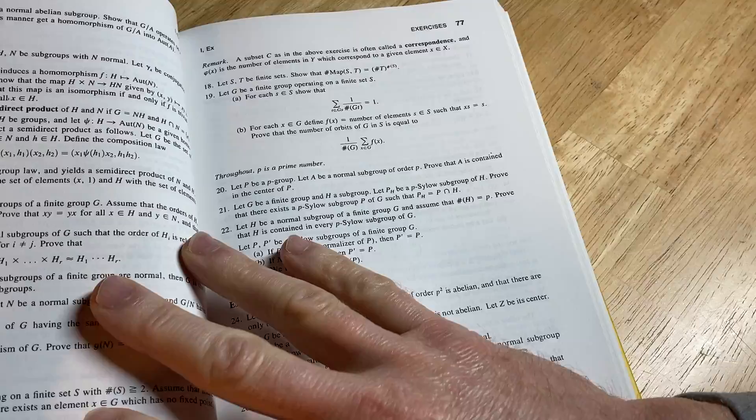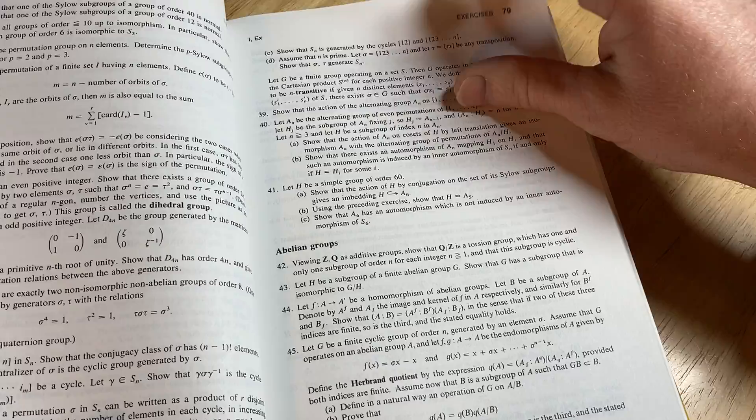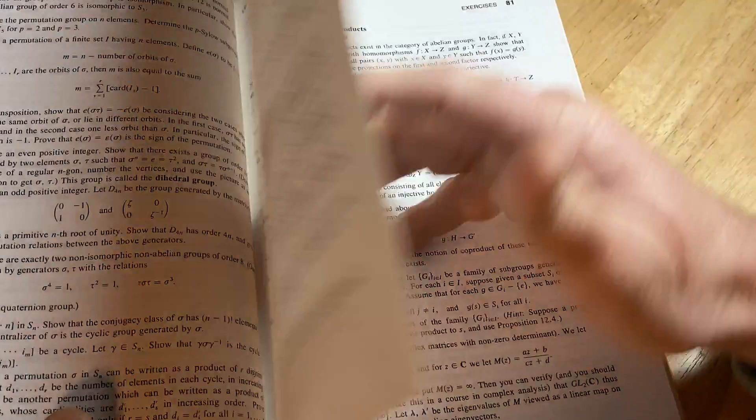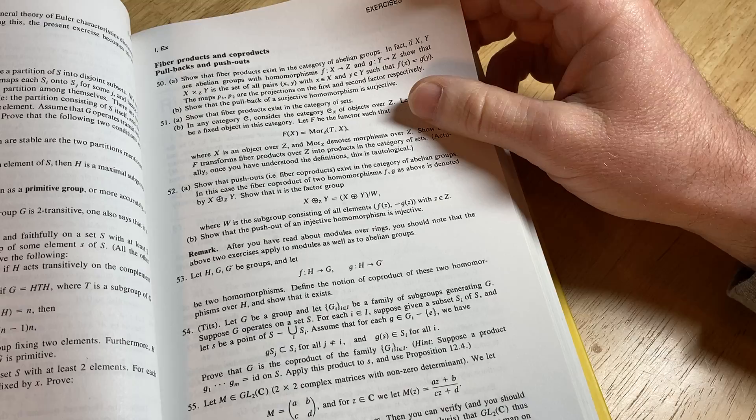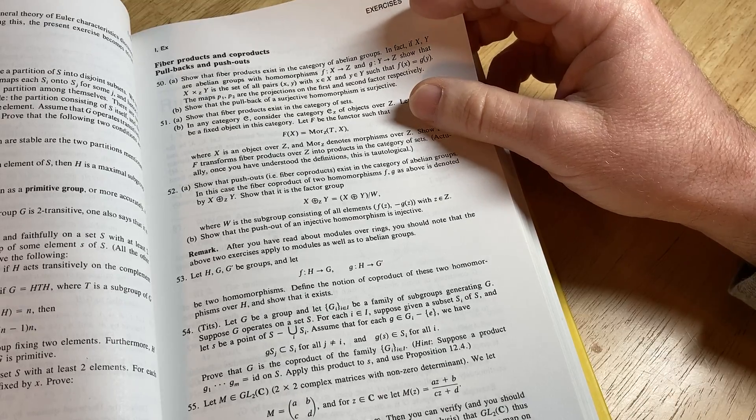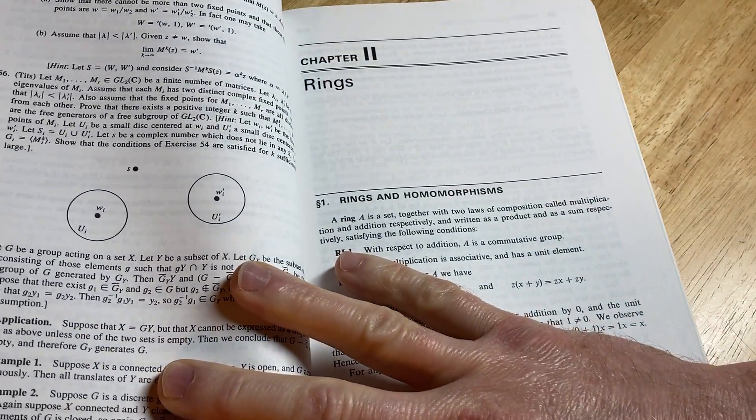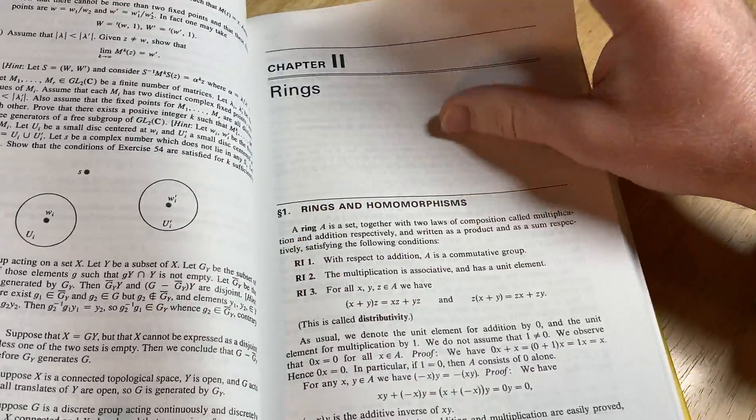They look pretty significant. And then some more here. I mean, you've got a lot of problems, right? Look at that. Look how many exercises you have. It's ridiculous. There's no answers, of course. That would be amazing. Fiber products and co-products, pullbacks and pushouts. Wow. All kinds of stuff.